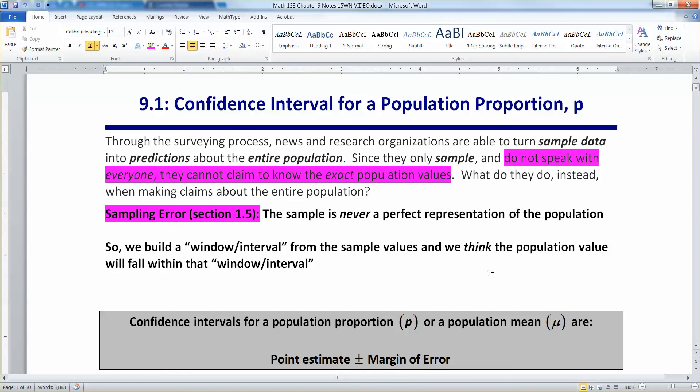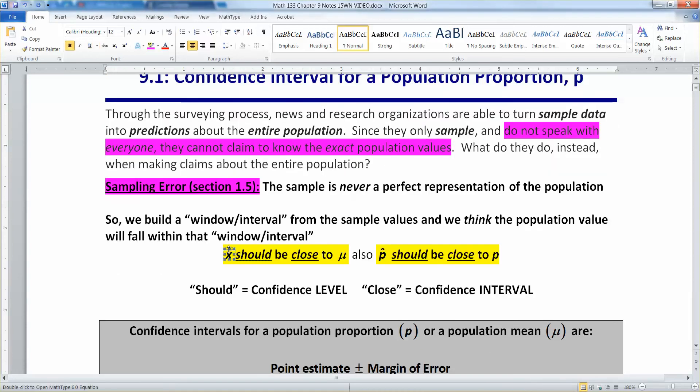If you recall from back in chapter 3, what we're saying is that we think that the population value is close to the sample value, but we don't know how close. Let me give you an example. So my two examples would be that mu should be close to X bar. So my population value should be close to my X bar, but I don't know how close. And then P, by the same token, should be close to my P hat. So my population value should be close to my sample value.